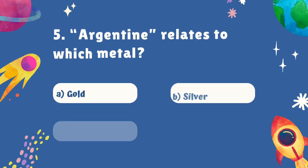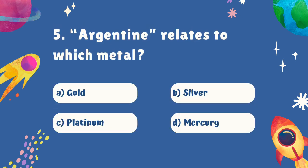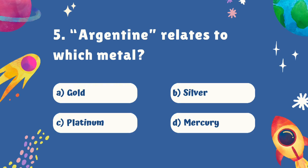Question number five. Argentine relates to which metal? Is it A. Gold, B. Silver, C. Platinum, or D. Mercury? The correct answer is B. Silver.